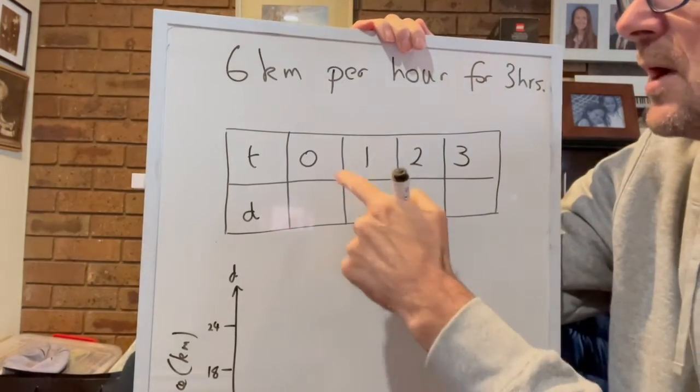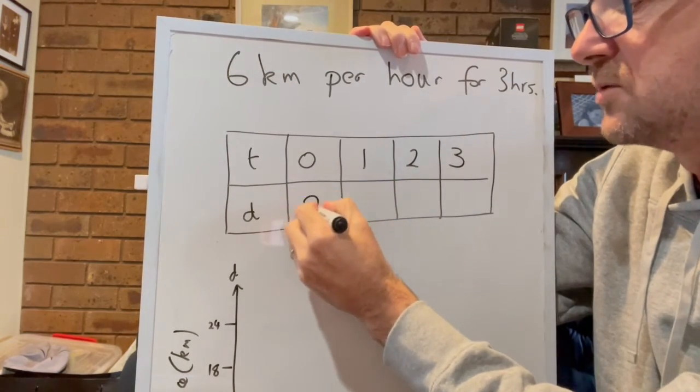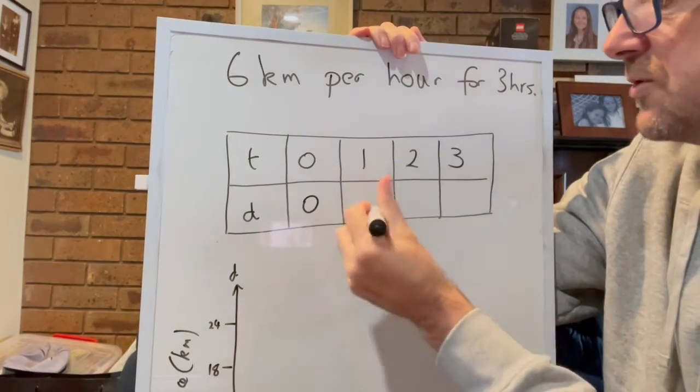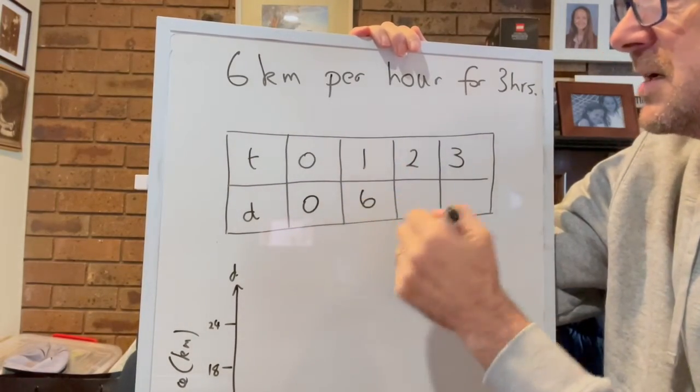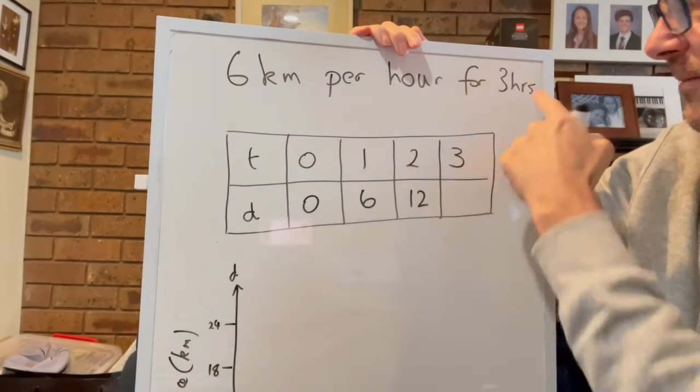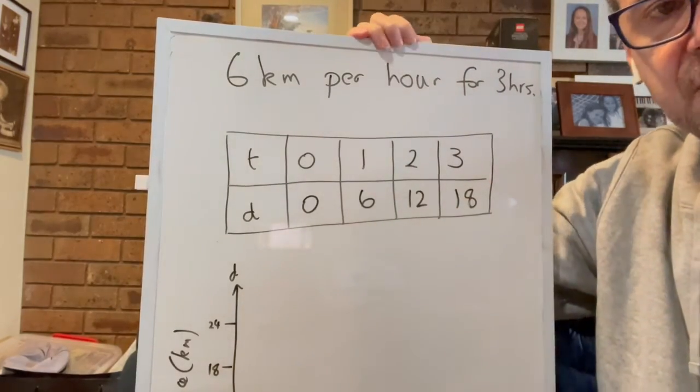So at zero time the jogger has ran zero kilometers. After one hour they would have run six, and then after two hours they would have run 12, and after the three hours they would have run 18 kilometers. So there's our table of values.